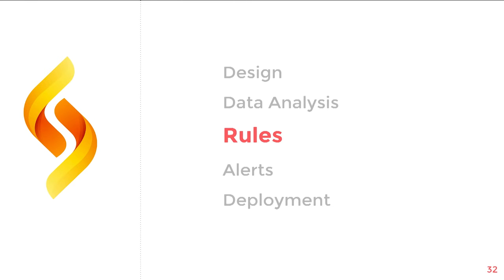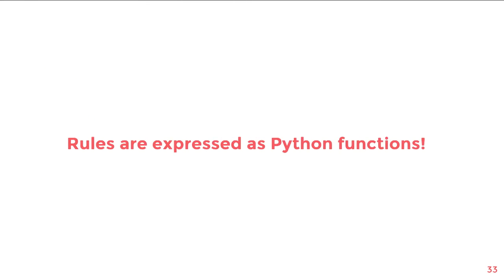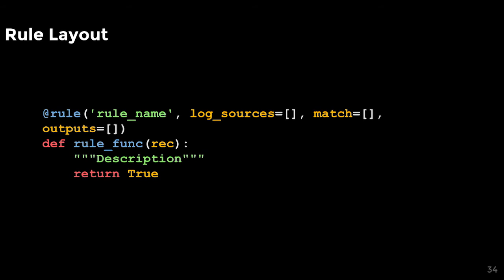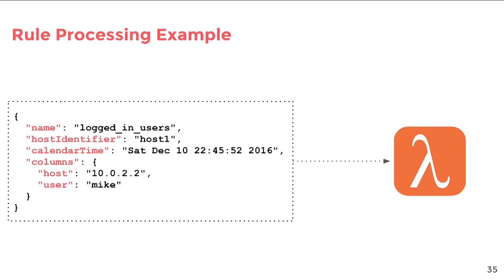Now for the fun part: writing rules to trigger real-time alerts. A rule is simply a user-defined Python function that evaluates to true. Each rule is declared with a unique name, a list of log sources to load from, common matchers, and outputs to send to when alerts are found. Records are used as input for all functions, and a chain of Boolean expressions determines if a match is found. In this example log, which is the result of an OSQuery logged-in users query, we have a user named Mike logged into a host called host1. We're going to write two alerts that would be triggered by this log.